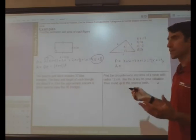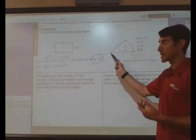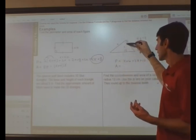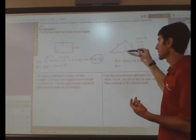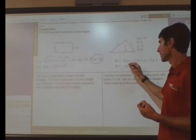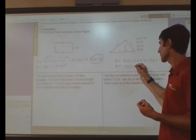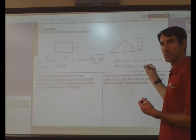For the area, it's going to be base times the height. The base being, in this case... or sorry, the base being c and the height being d. So, we have a base of 10 and a height of 2x. That gives me an area of 20x.